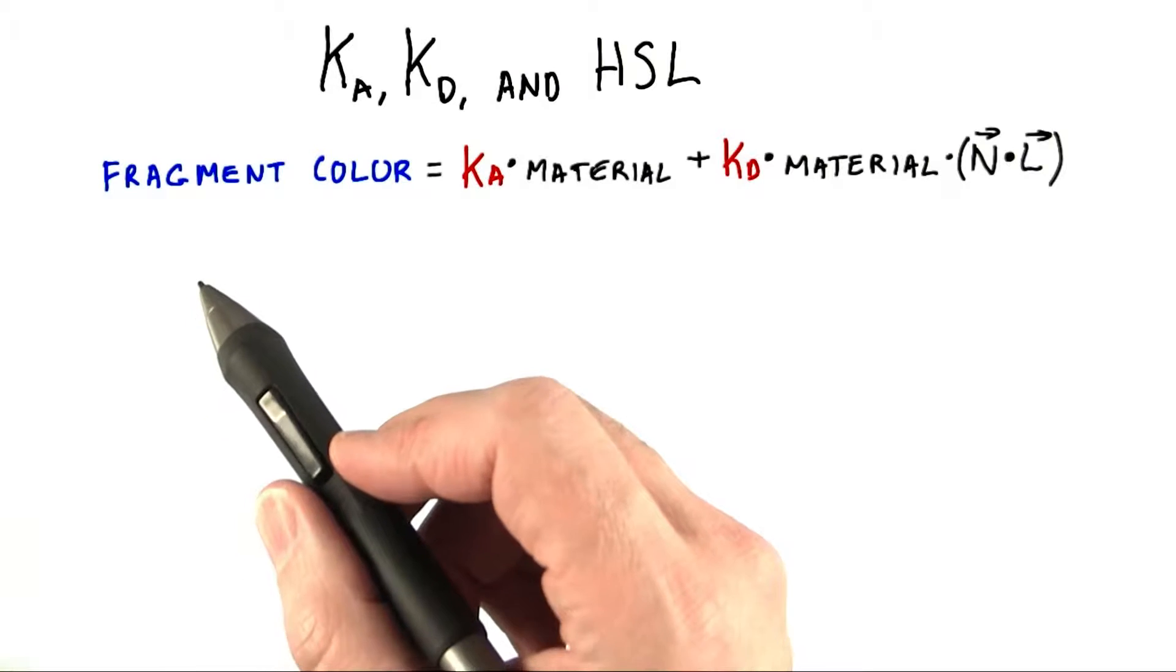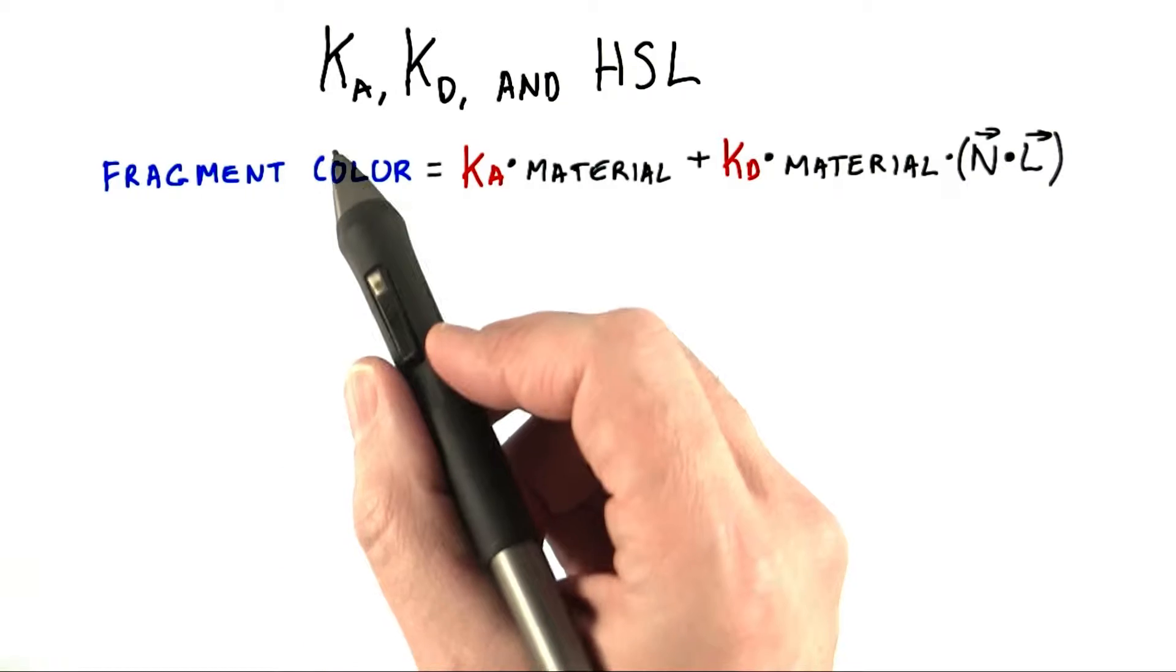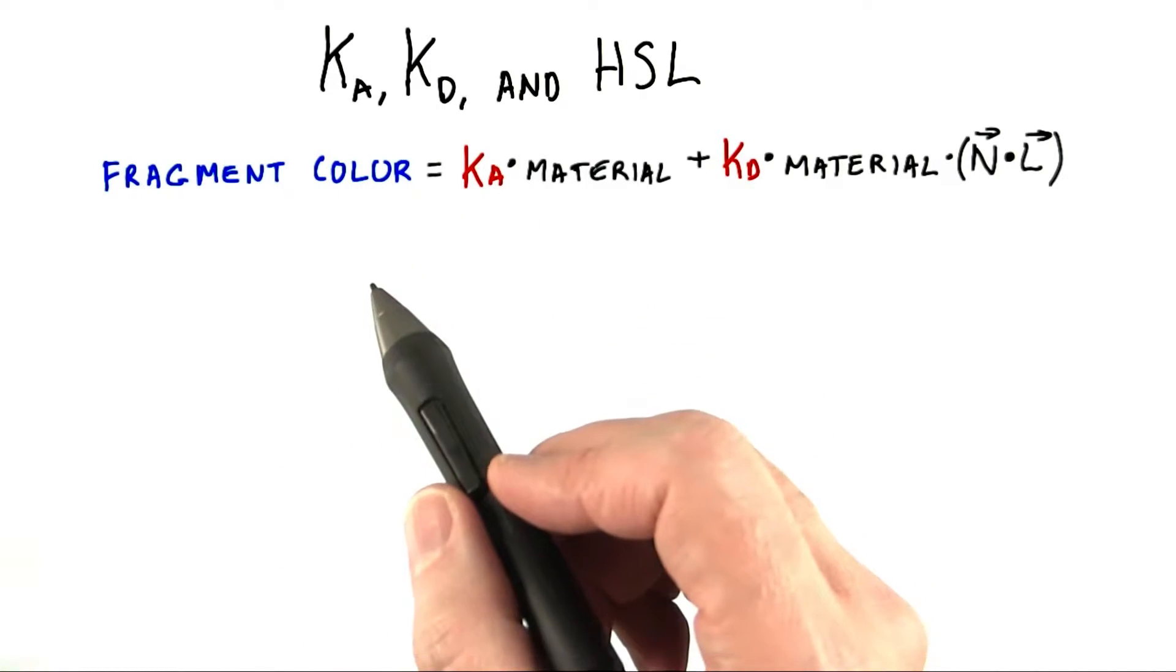Now that you understand the components of the diffuse reflection model, give them a try. In the demo that follows, we'll use the terms ka and kd in the reflection equation.